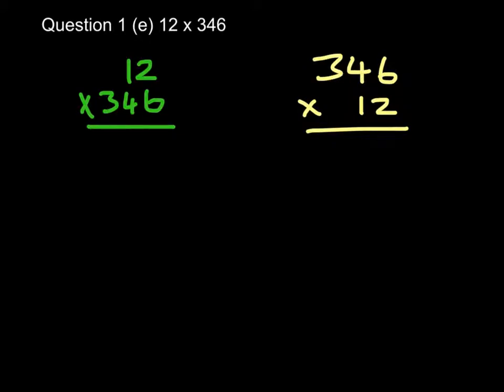So if I use the 12 times 346, first of all I will multiply by the units, which is the 6. The 6 times 2 is 12, put down my 2, carry my 1. 6 times 1 is 6, add 1, 7. I'm then going to multiply by my 4 tens, so I'll multiply by 40. I put down my 0, 4 times 2 is 8, 4 times 1 is 4. This one is finished.